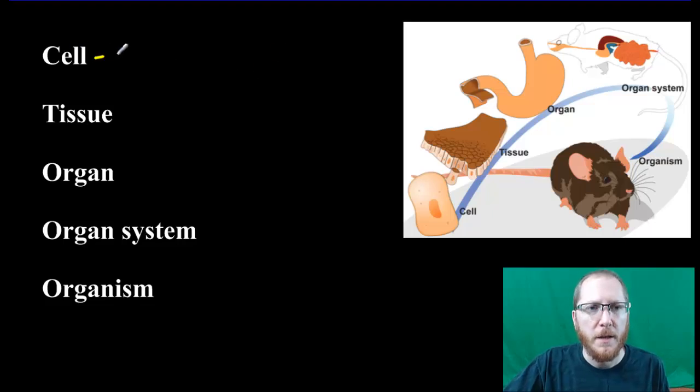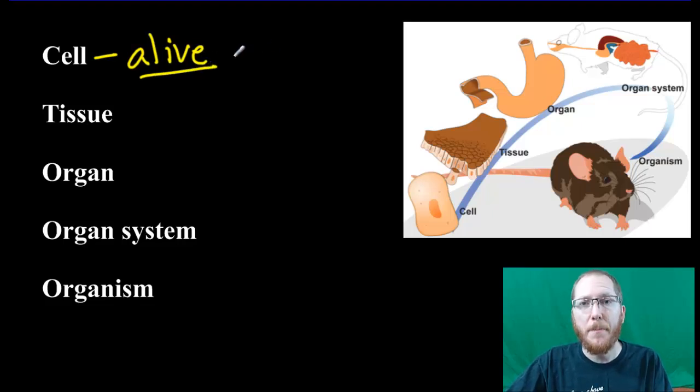For starters, we have our cell, and our cell is going to be the bare minimum to be alive. Just having one cell means that you can be alive. You can stop there. You don't have to go past it. Bacteria, many protists, some fungi, they will all be single-celled and that's it.